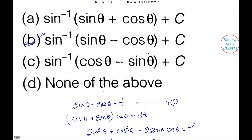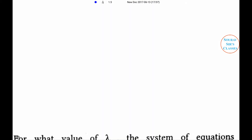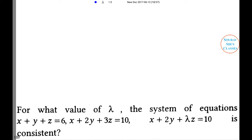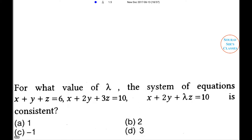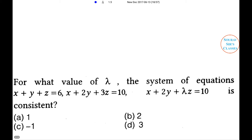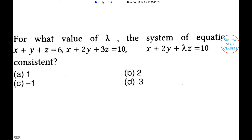Next problem. For what value of lambda is the system of equations x + y + z = 6, x + 2y + 3z = 10, and x + 2y + lambda*z = 10 consistent? The four options are 1, 2, -1, and 3.